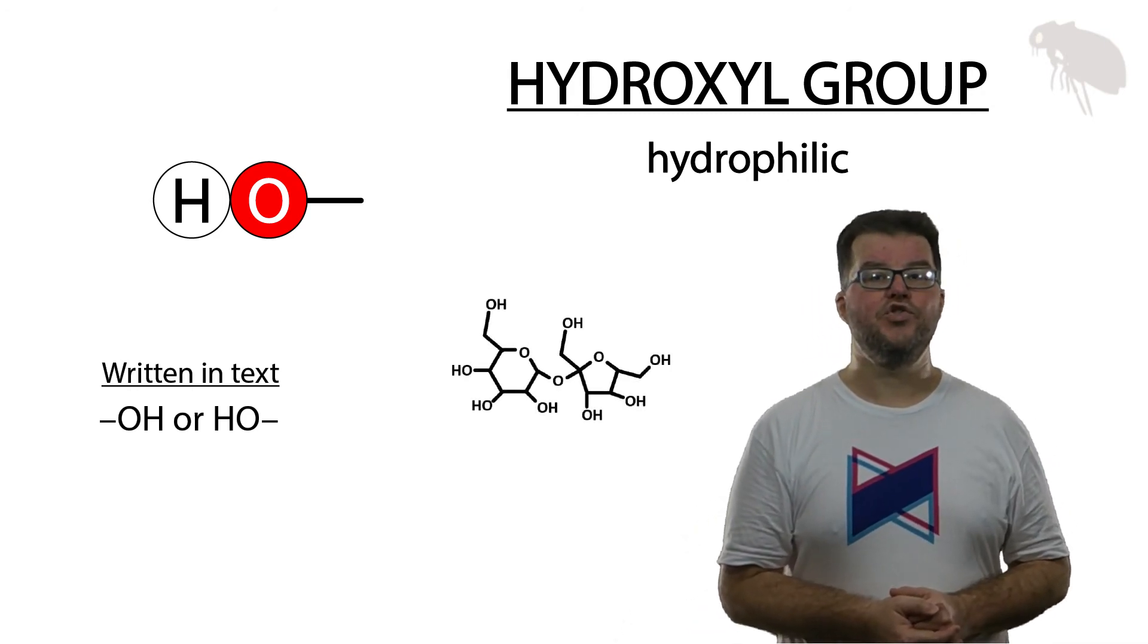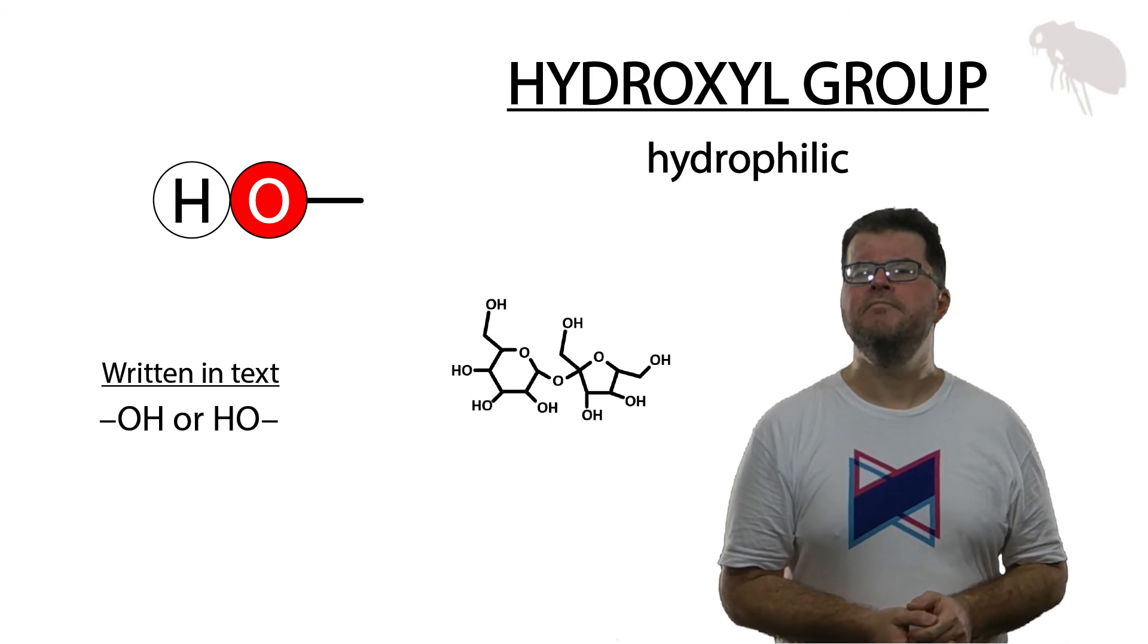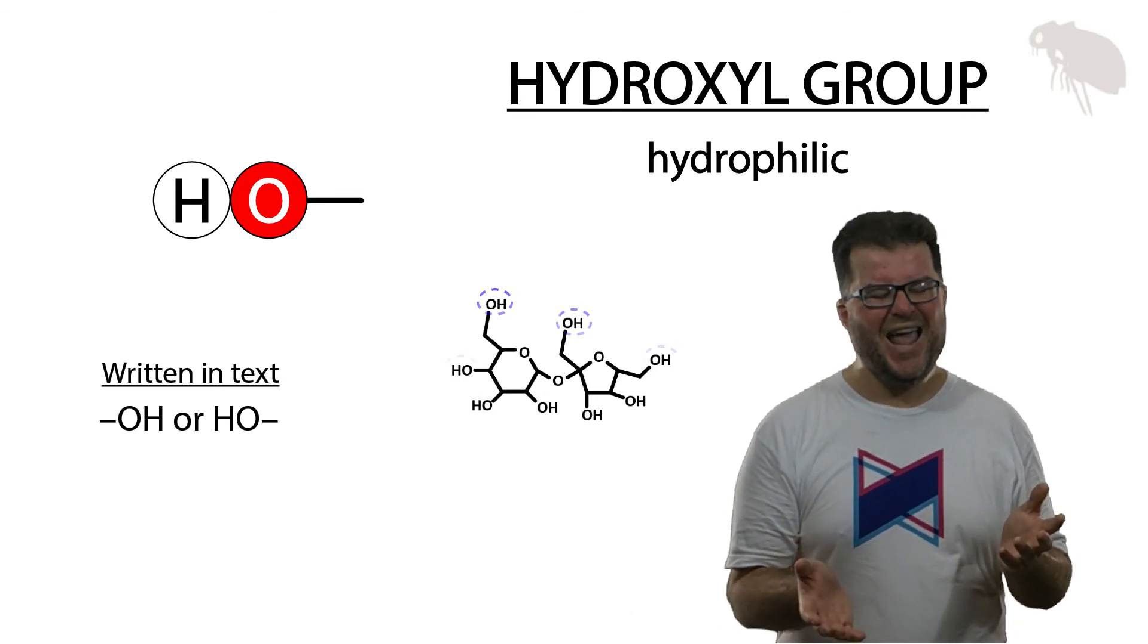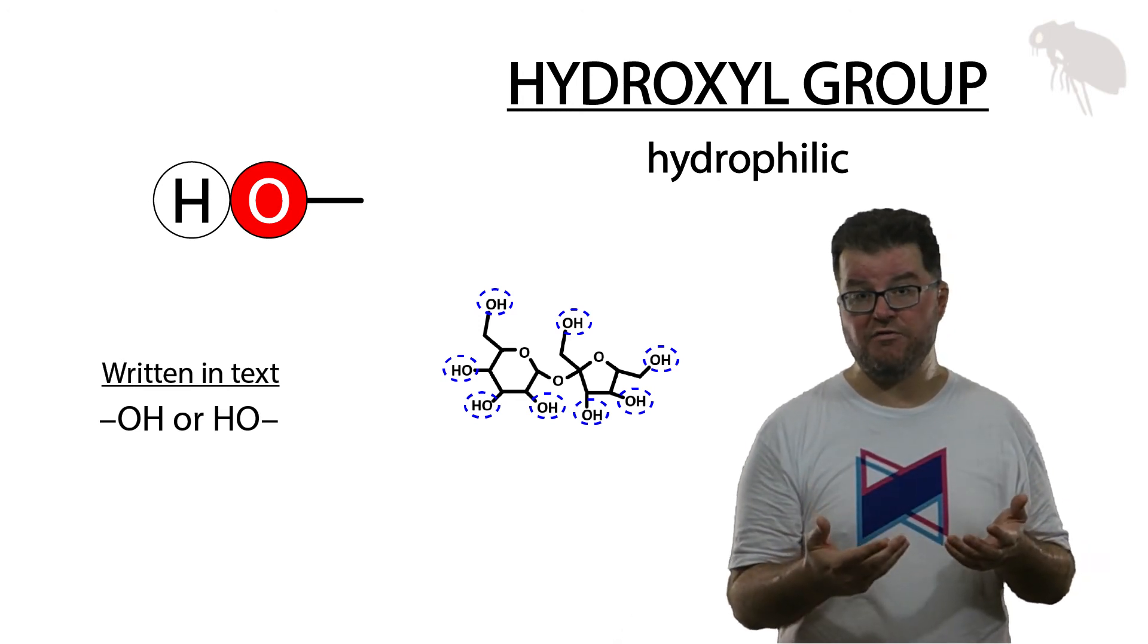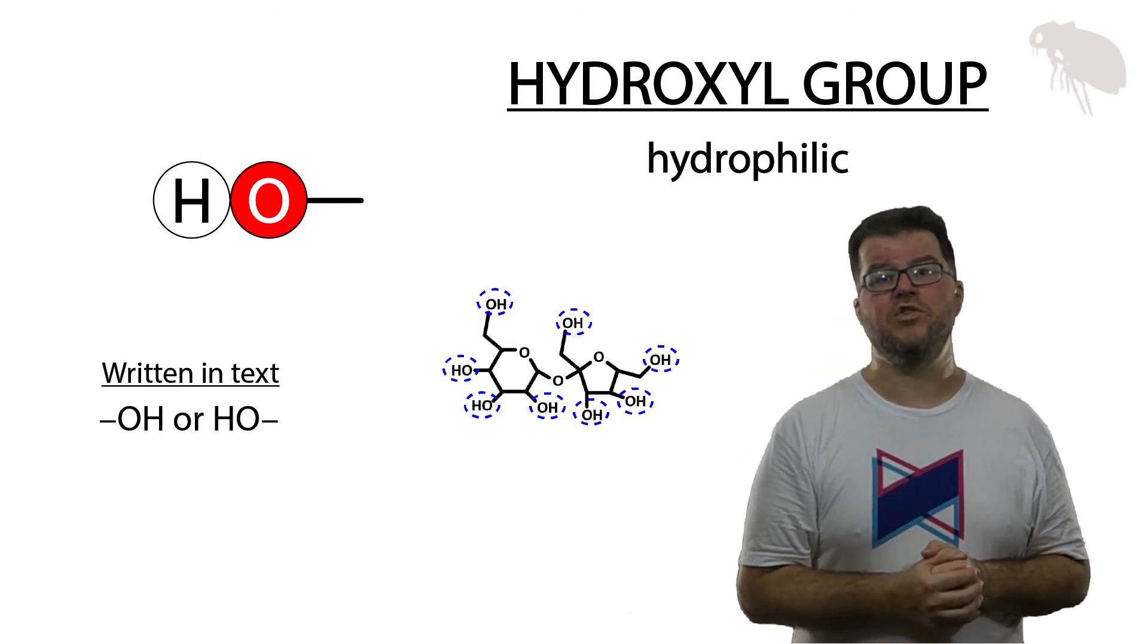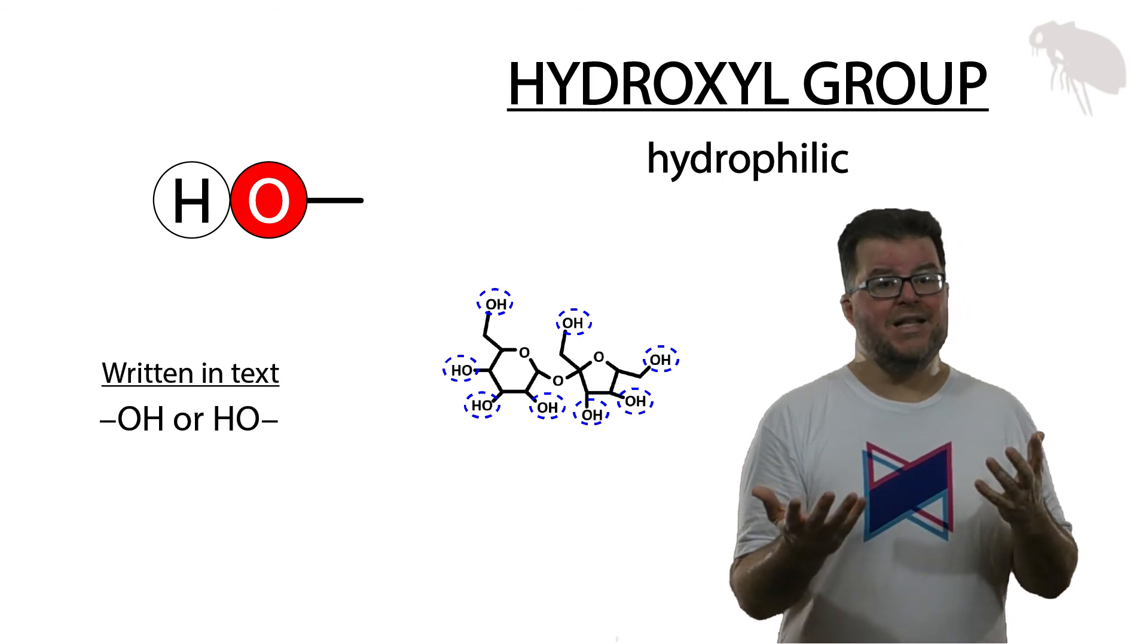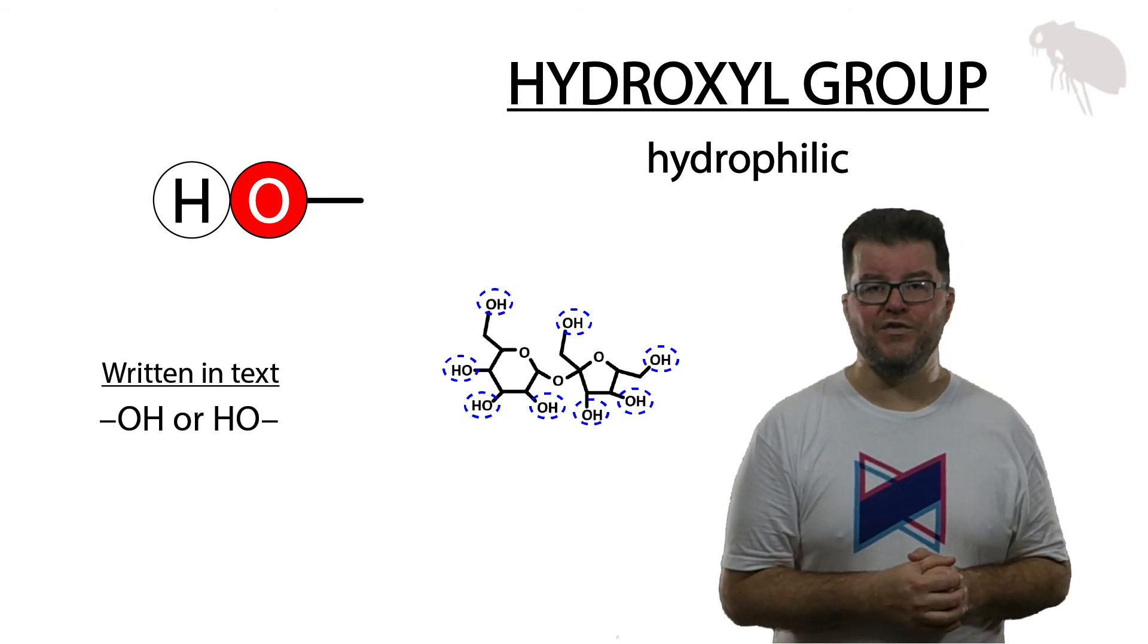And here's an example: sucrose, or table sugar. Look at those eight hydroxyl groups. There's some oxygens in the core skeleton making it even more hydrophilic, but all eight of those hydroxyl groups are very hydrophilic. It's no wonder table sugar dissolves so well in water.